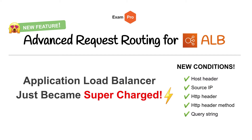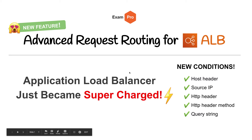If you aren't familiar with ALB versus classic load balancers, ALBs have really cool routing capabilities so that you have more reusability with your load balancers and you save a lot of money. The previous rules we had were path names and host names — host names being subdomains and path names being how the URL looks. Now with five new conditions, we get more reusability, more flexibility, and new cool ideas on how we can use ALB.